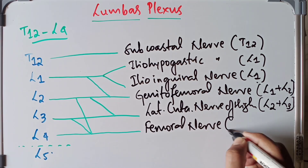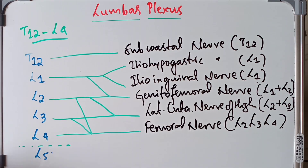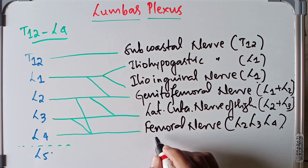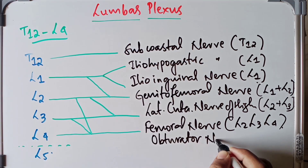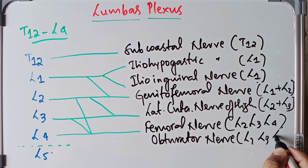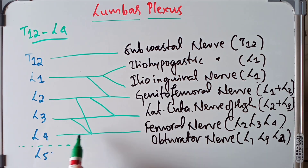We also have the obturator nerve, which receives branches from L2, L3, and L4 — the same root value as the femoral nerve. Additionally, there is the accessory obturator nerve, which receives branches from L3 and L4 only.